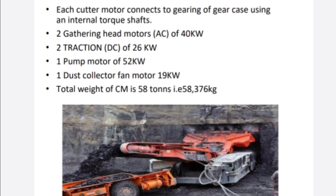The cutting motor connects to the gear case via an internal torque shaft. Two gathering head motors of 40 kW collect coal from the apron to the chain conveyor. The machine has two traction DC motors of 26 kW each, one dust collector fan motor of 19 kW, and a pump motor of 52 kW. The total weight is 58 tons (58,376 kg). It is equipped with two standard flameproof AC induction cutting motors of 170 kW each, mounted parallel to the boom frame.